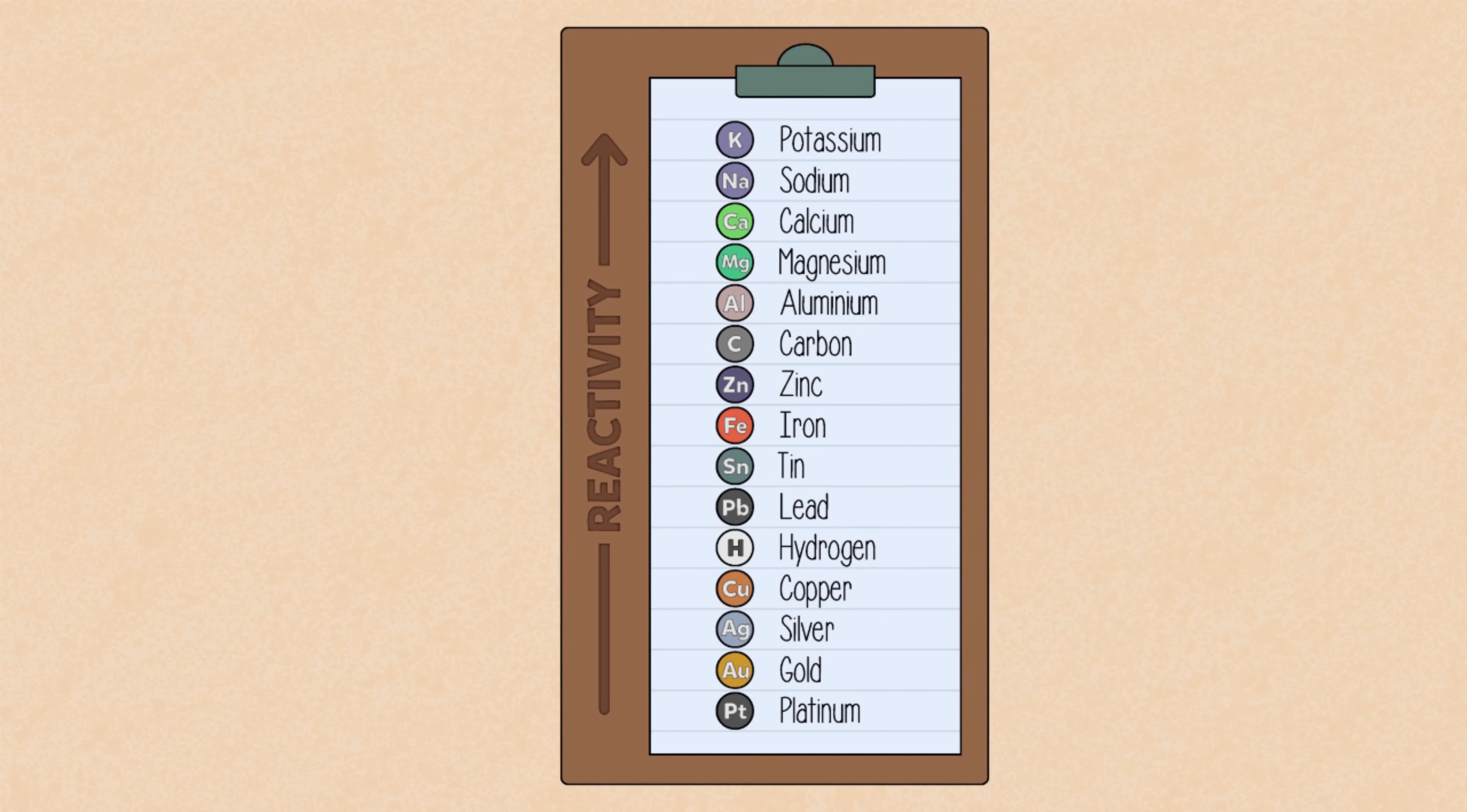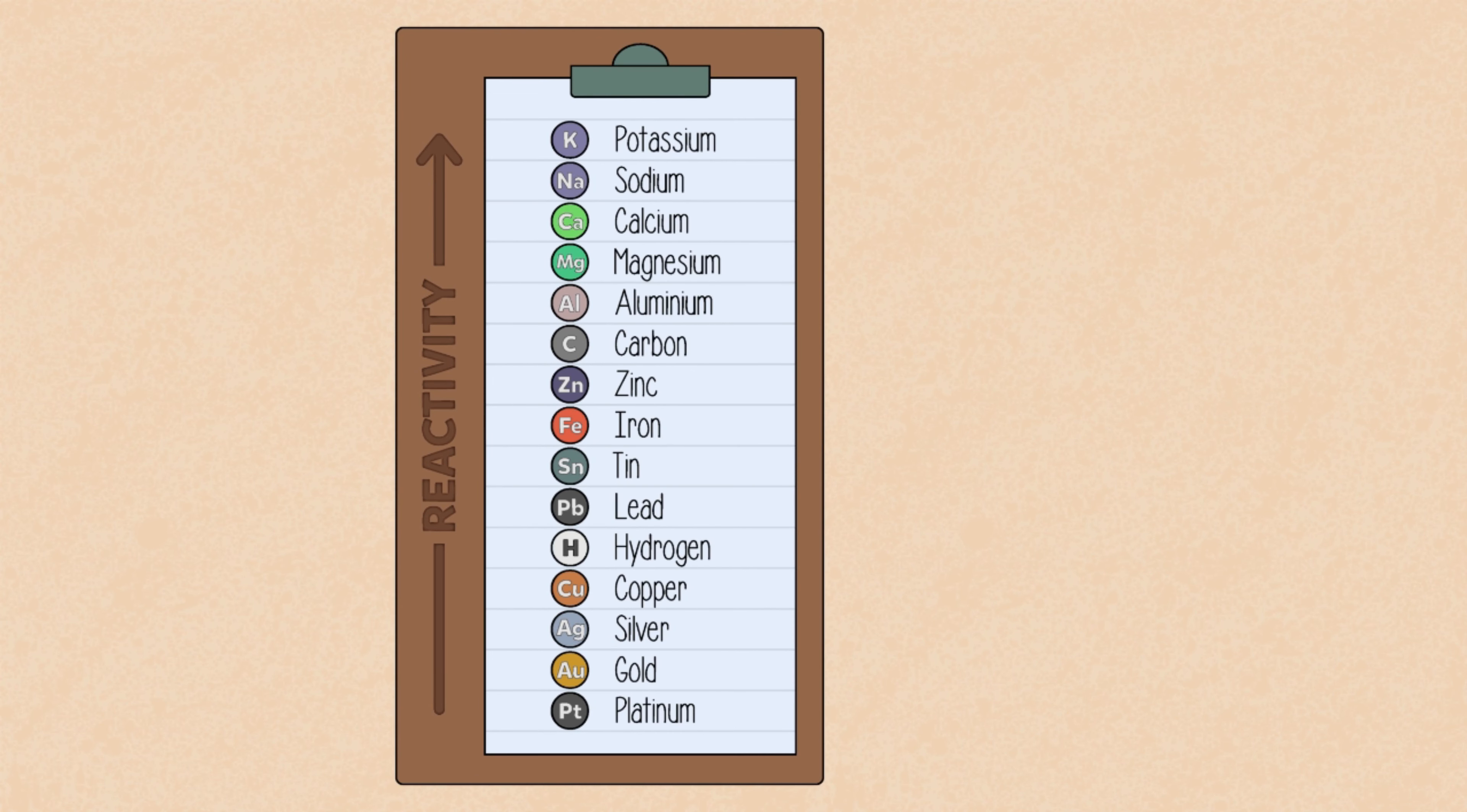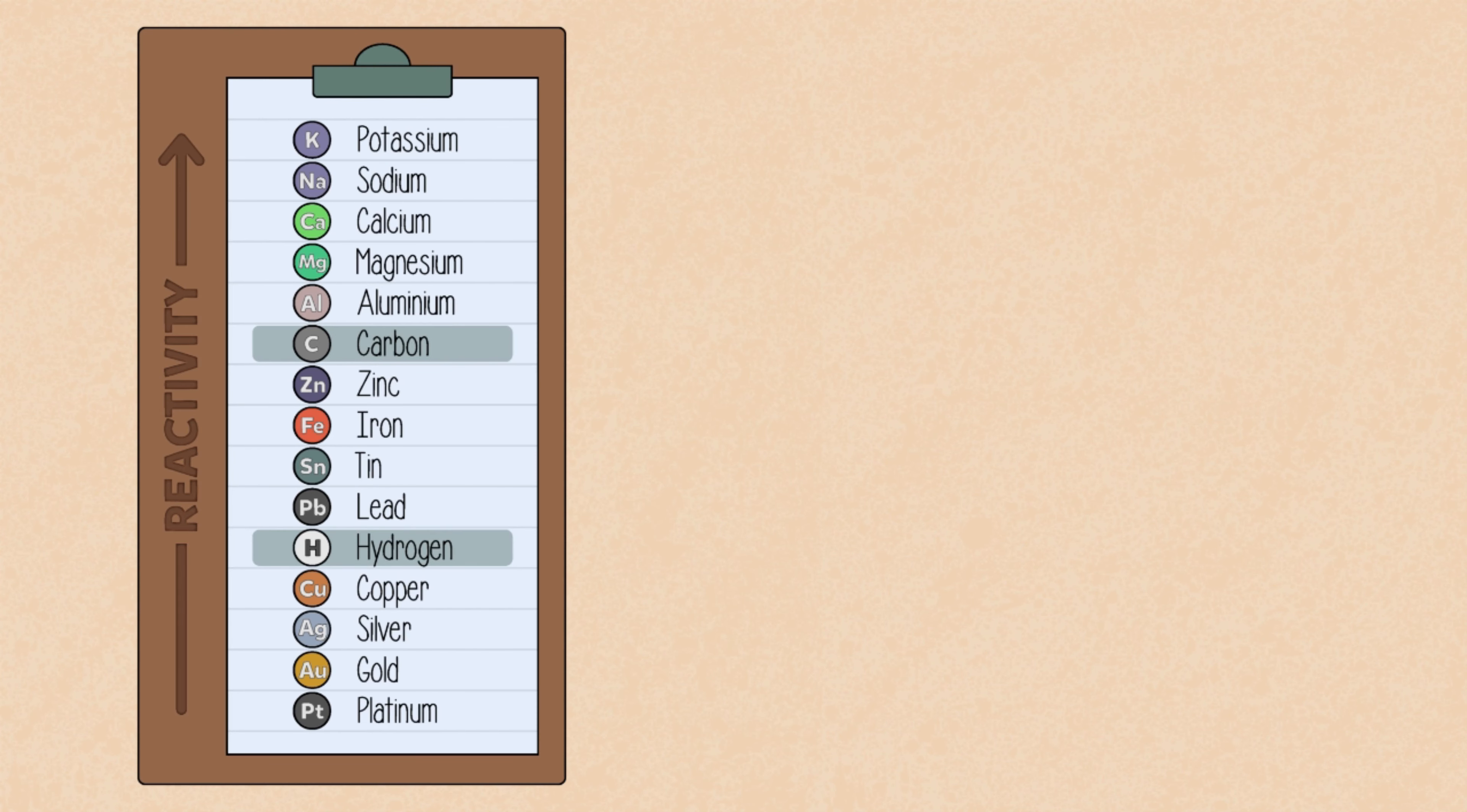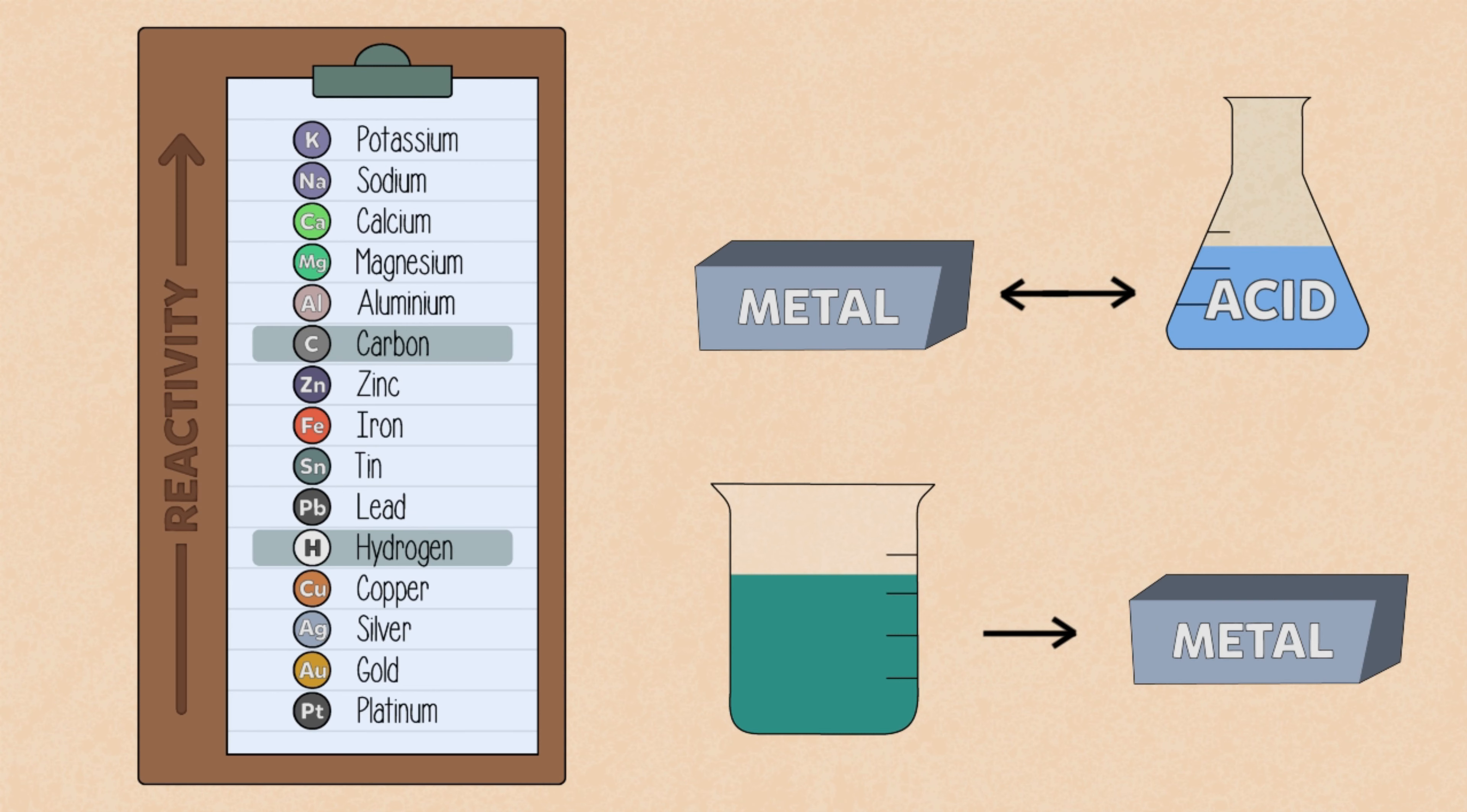If you look closely at the series, you will see that hydrogen and carbon are added for comparison purposes. This is important to help predict whether or not a metal will react with an acid or if it can be extracted from another compound.